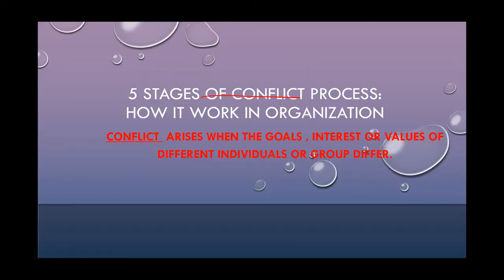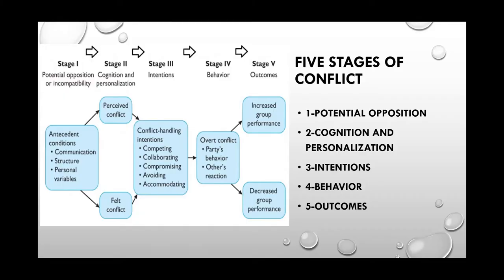On to the conflict process. We all know that conflict arises when the goals, interests, or values of different individuals or groups differ. The conflict process shows how conflict works in an organization — it identifies the stages where conflict starts, how it grows, and how it ends. There are five stages of conflict process: the first step is potential opposition; second, cognition and personalization; third, intention; fourth, behavior; and lastly, outcome.